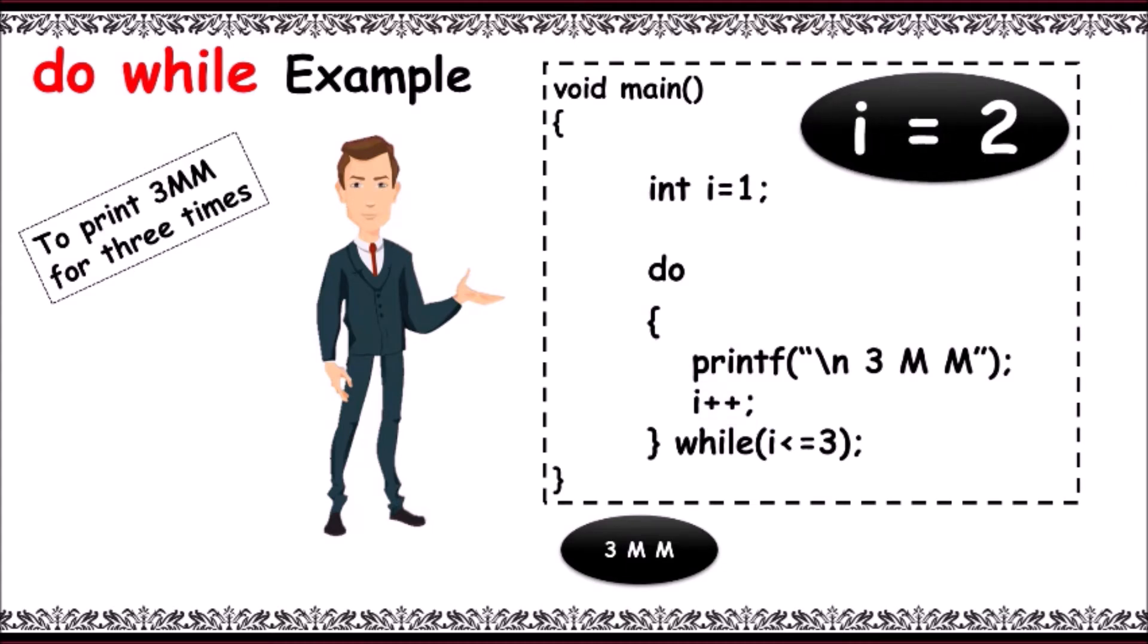The condition is verified: i less than or equal to three, that is two less than or equal to three. As the condition is true, control goes back to the starting and prints 3MM again.